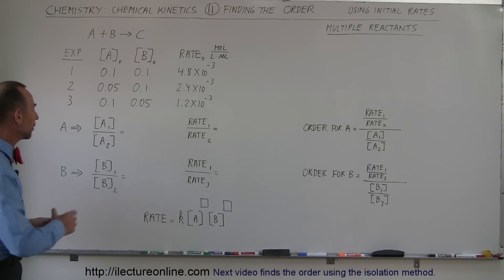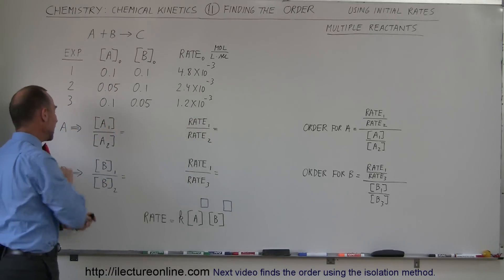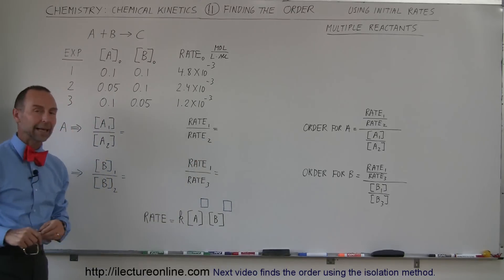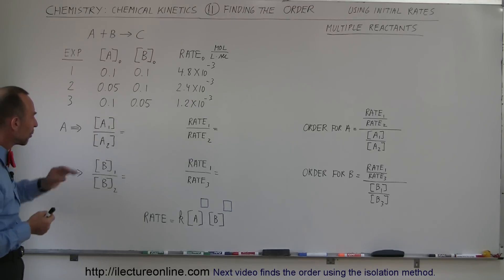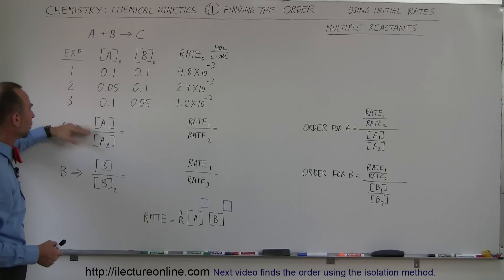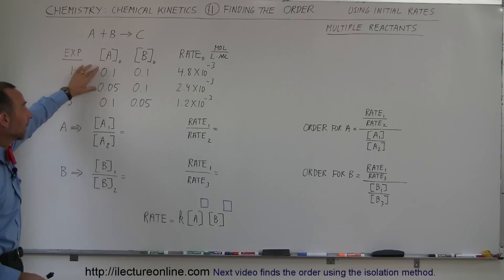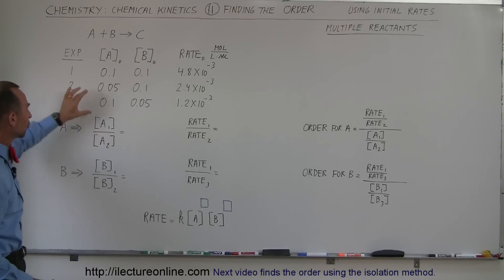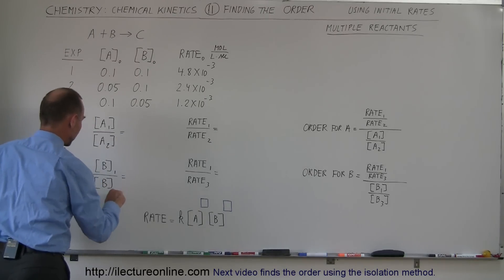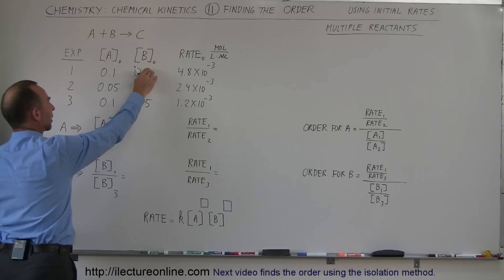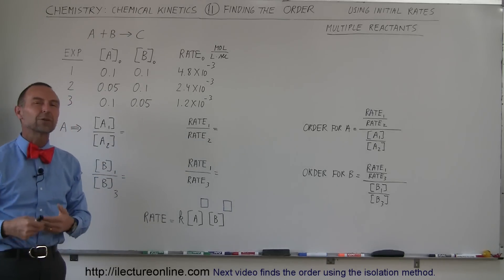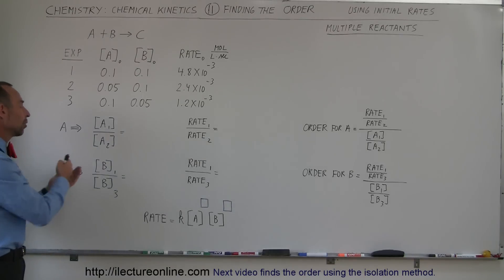We then compare the change in concentration to the change in rate for A, and similarly for B. We compare Experiment 1 to Experiment 2 because that's where the concentration of A changes. Then we compare Experiment 1 to Experiment 3, where the concentration of B changes from 0.1 to 0.05. We find the ratio of the rates and compare it to the ratio of the concentrations to determine the order.